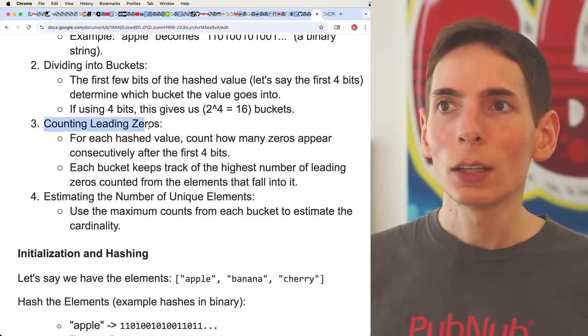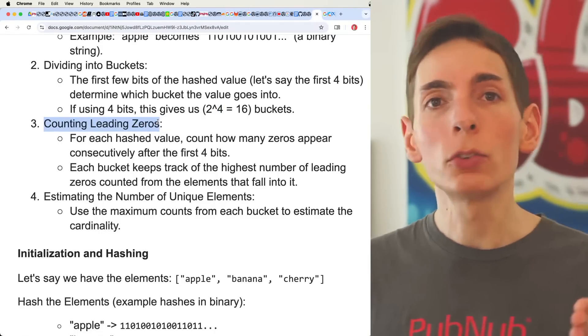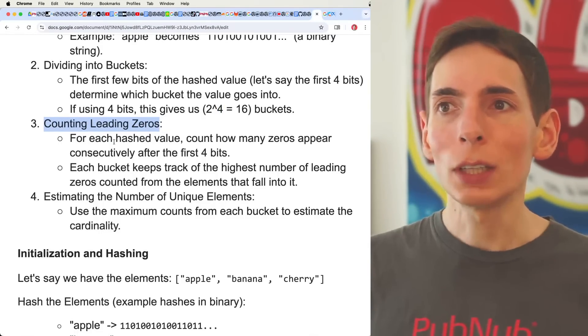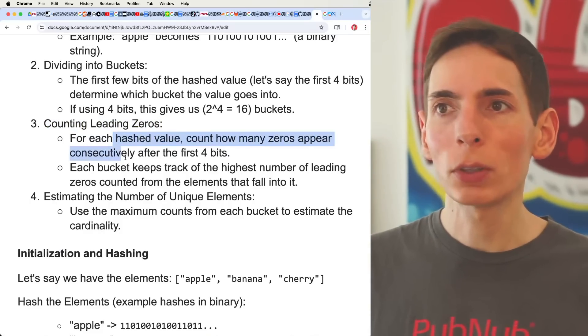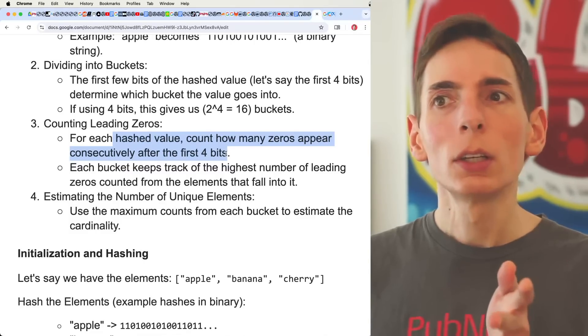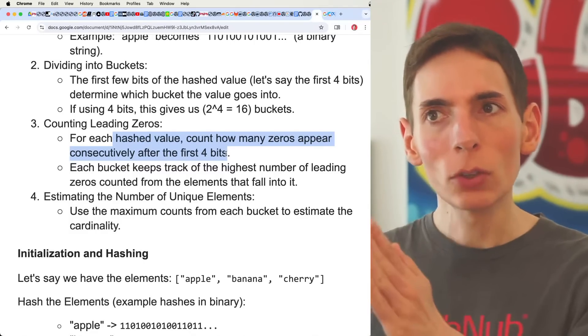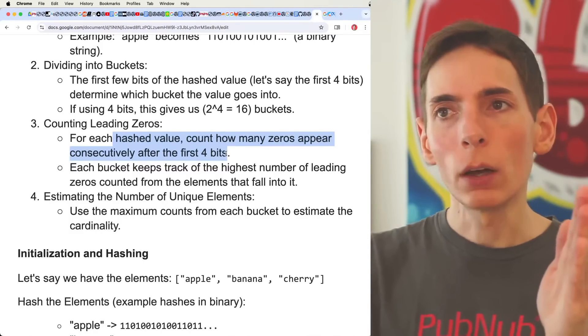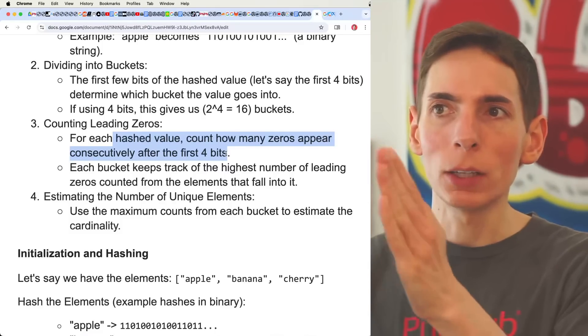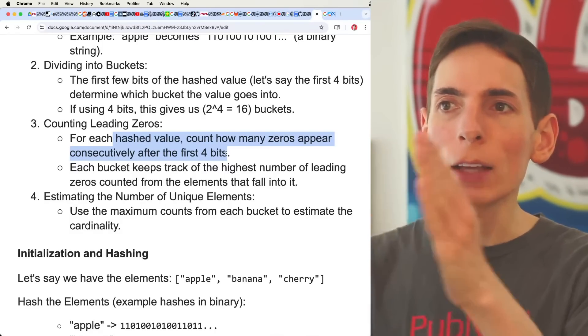Counting leading zeros - this will determine what values go into those integers. For each hashed value, count how many zeros appear consecutively after the first four bits. So you can do this in any order you want. You can do it after the first four bits, or at the tail of the binary string.